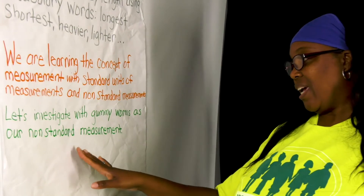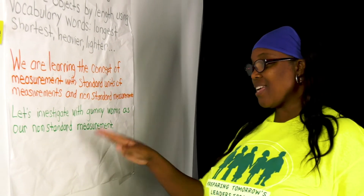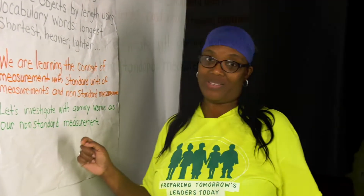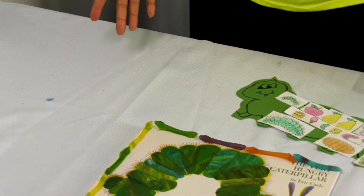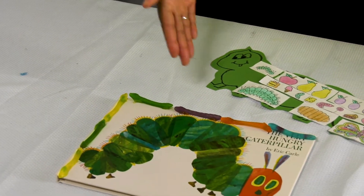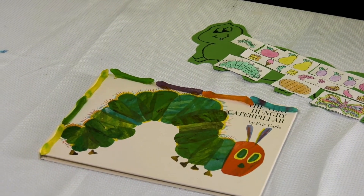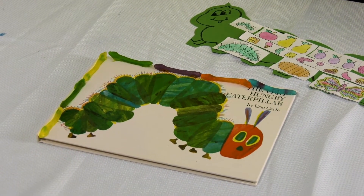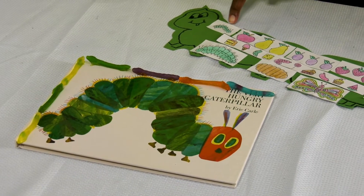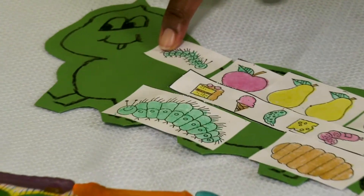So let's investigate with gummy worms as our non-standard measurements. Here on the table I have the book The Very Hungry Caterpillar. And if you can recall in that particular story, it starts off with being a little caterpillar.